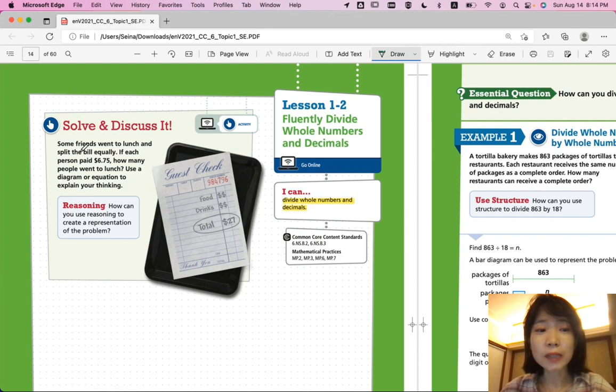Let's look at solve and discuss it. Some friends went to lunch and split the bill equally. If each person paid $6.75, how many people went to lunch? Use a diagram or equation to explain your thinking. So, total is $27 and we divide it by the number of people we have so that we're paying equally.